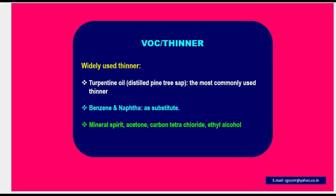Widely used thinners include turpentine oil, distilled pine tree sap, the most commonly used thinner. Benzene and naphtha are substitutes. Other thinners include mineral spirits, acetone, carbon tetrachloride, and ethyl alcohol.